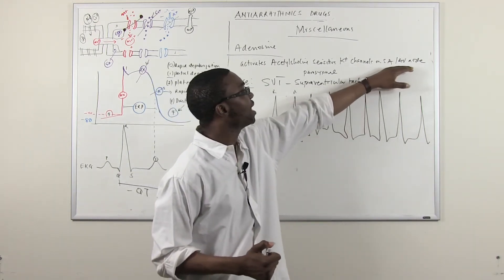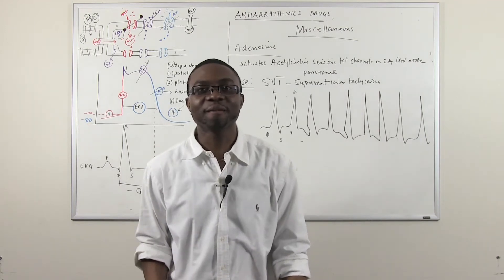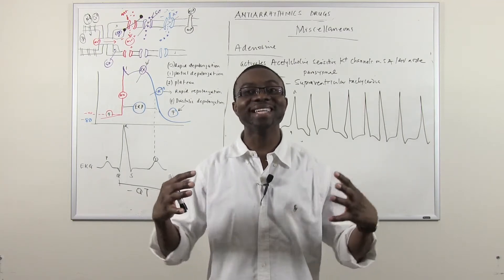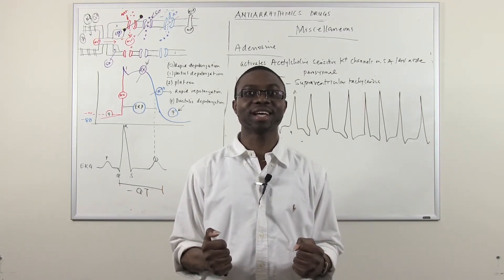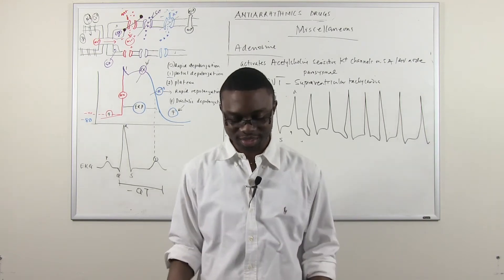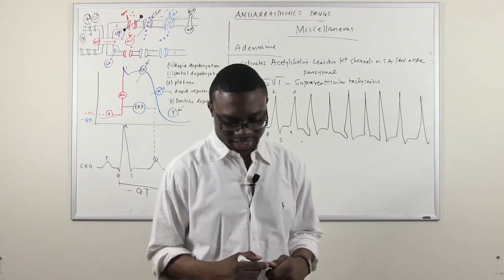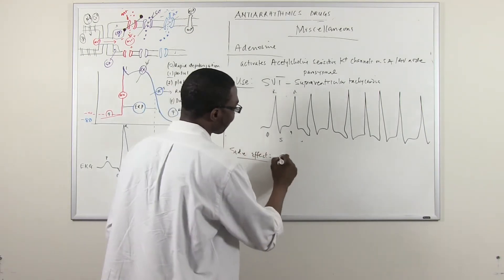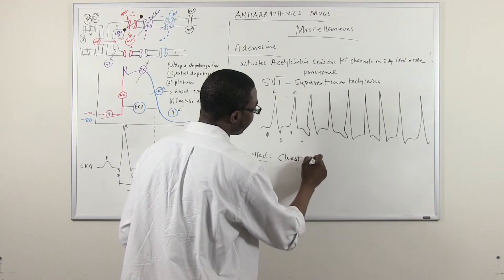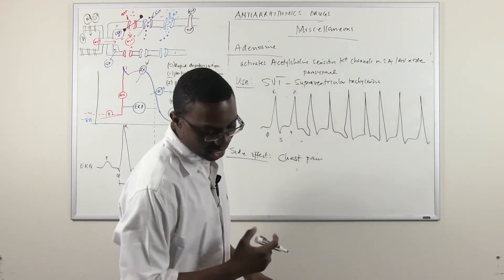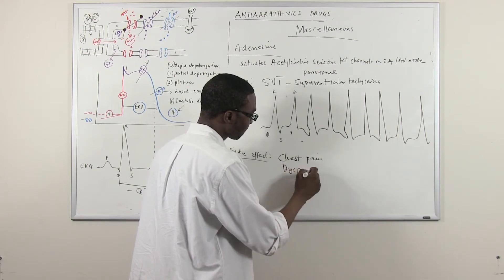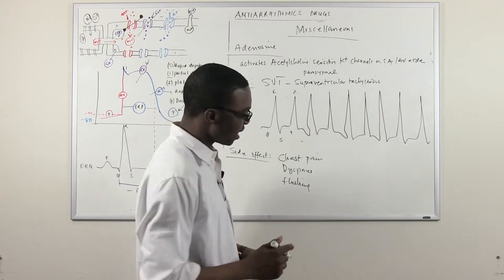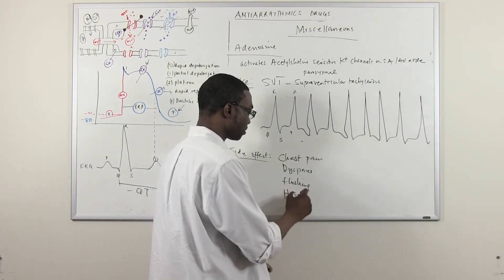When it blocks the SA node and the AV node completely, physically, the heart actually stops and then restarts over. So, the patient will have this sense of impending doom when they get this drug, and it feels like, oh my god, they're going to die, but no, you're trying to save their life. So, the patient is going to develop chest pain because their heart is going to stop. So, they get chest pain, they develop shortness of breath, and they have some flushing sensation in their bodies, and eventually, they have a headache.